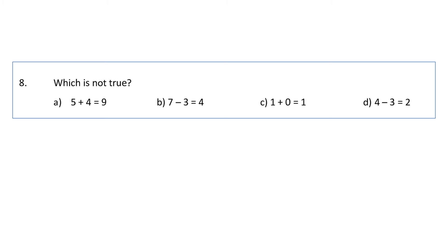Which is not true? Option A: 5 plus 4 equals 9 - this is true. 7 minus 3 equals 4 - this is also correct. When we subtract 3 from 7, it will become 4. 1 plus 0 equals 1. We all know if we add 0 to any number, that number will remain same. Next is 4 minus 3 equals 2. This one is wrong because 4 minus 3 is 1. So this is not true. Answer will be D.